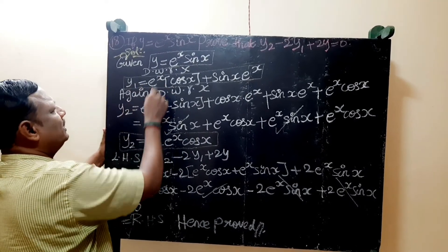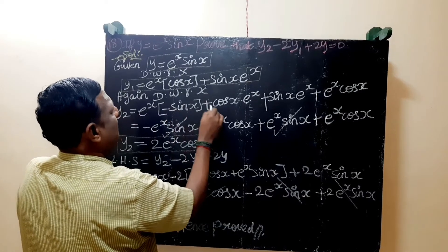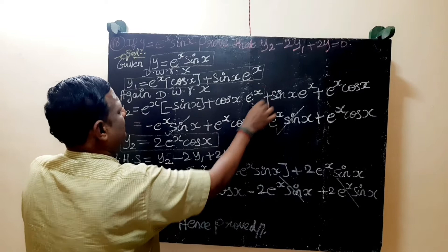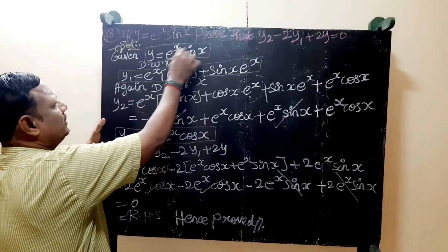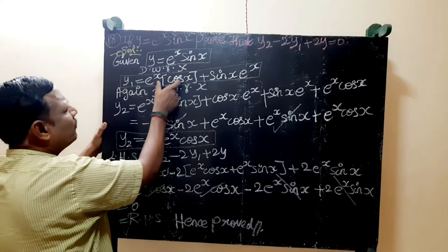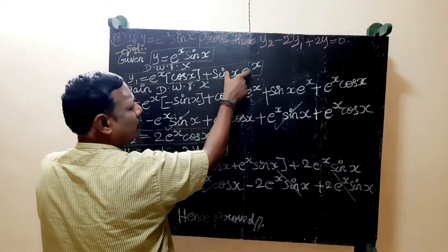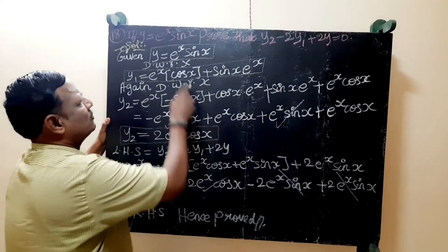y1 is equal to e power x and cos x is equal to e power x and cos x is equal to e power x. We know that we have two variables u into v method. Now y1 is equal to y1 and y1 is equal to u into v method.